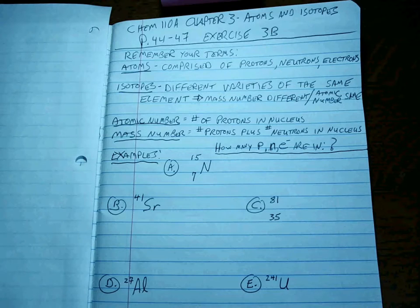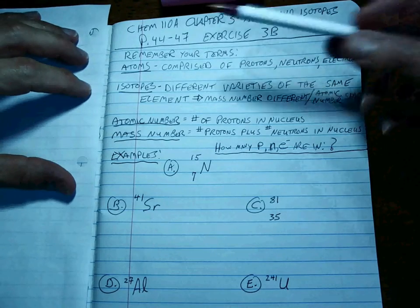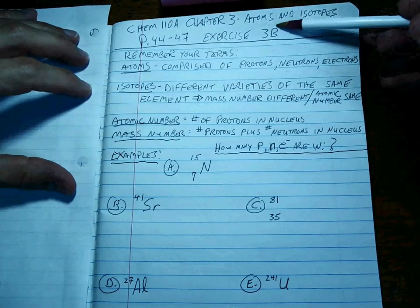Chapter 3 has to do with probably more chemistry than we've even encountered in chapter 1 and chapter 2. So we're going to first talk about atoms and isotopes. Pages 44 through 47, exercise 3B.